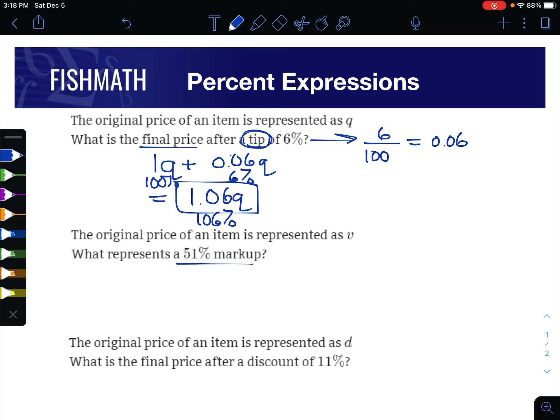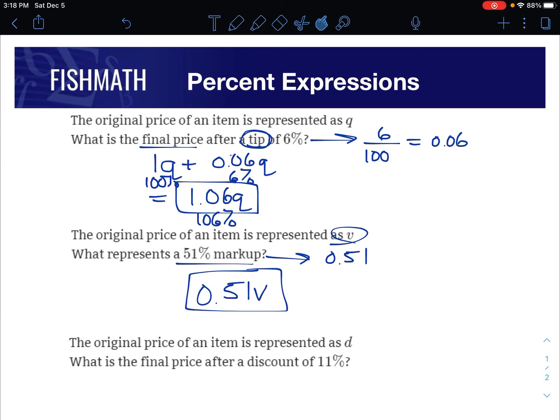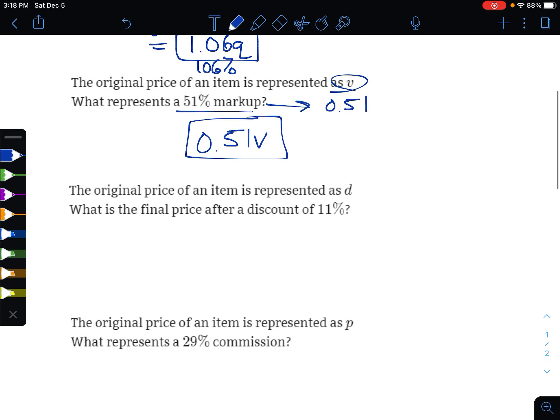For the next one, it wants 51% markup. It does not want the final price, just what the markup is of v. So again, convert to a decimal: 0.51. I want that of v, so it's just 0.51v. If it wanted the final price, you would add it on because a markup is added on, but it doesn't. It just wants the markup here.